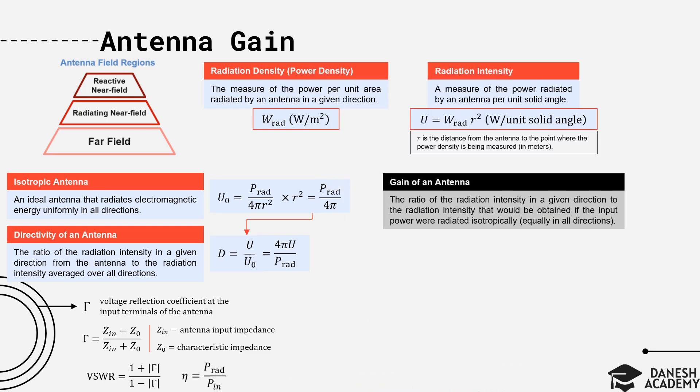Now, with these parameters, we can define antenna gain. It is defined as the ratio of the radiation intensity in a given direction to the radiation intensity that would be obtained if the input power, the total input power, were radiated isotropically. To measure that in a given direction, theta and phi, we divide radiation intensity in that direction by radiation intensity if input power P in was radiated isotropically, which is U in the direction of theta and phi divided by P in over 4 pi. We can connect this definition to the directivity by using the radiation efficiency eta, and finally gain is eta times directivity.